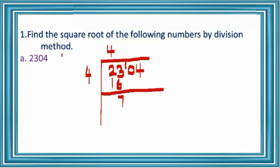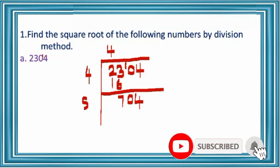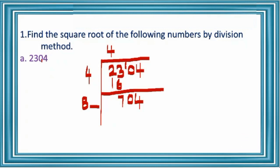Remainder is 7. Then bring down the next two numbers and write at the right side of the remainder: 704. Here 4 is the divisor, so double the divisor: 4 times 2 is 8. Leave a blank at the right side of the 8. Then you can add any number here.